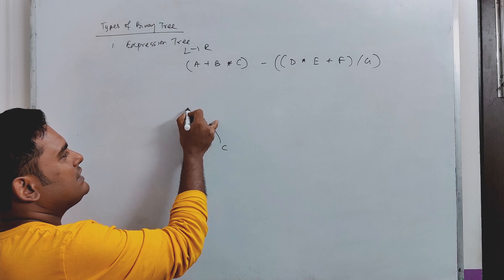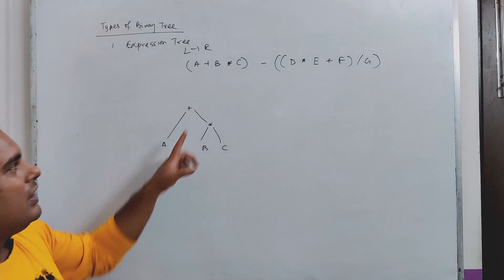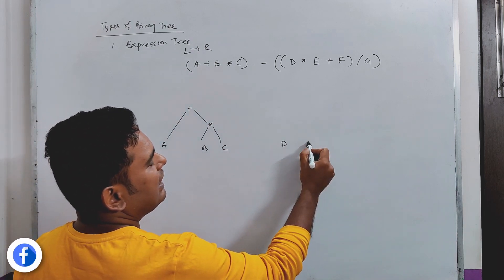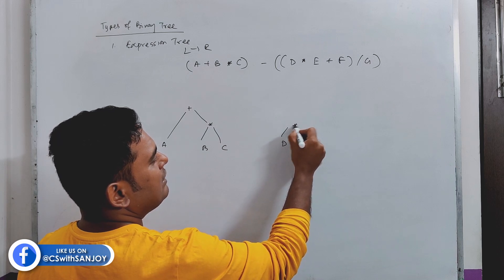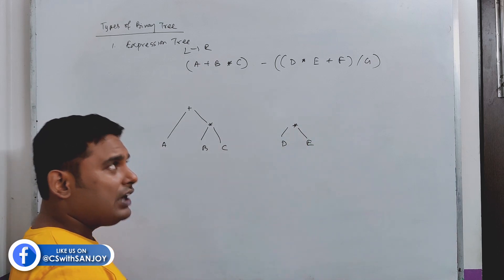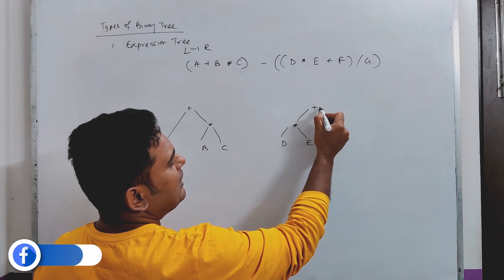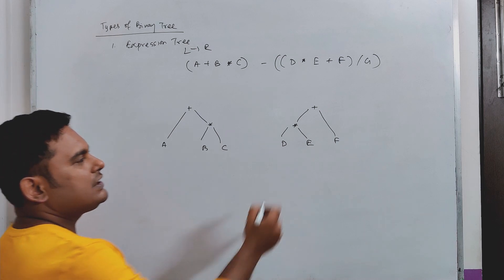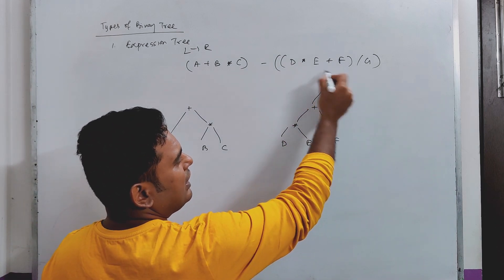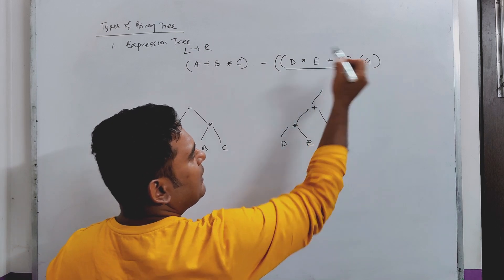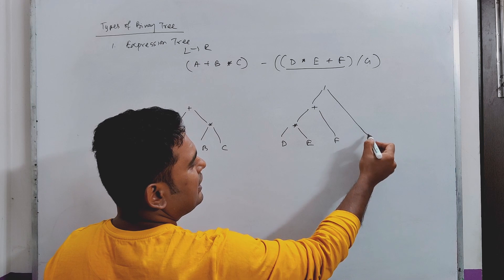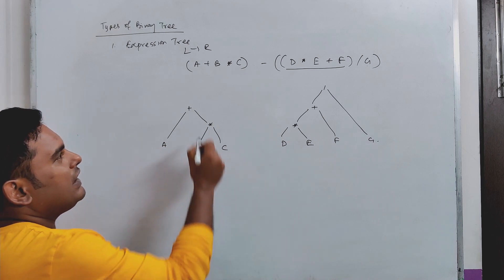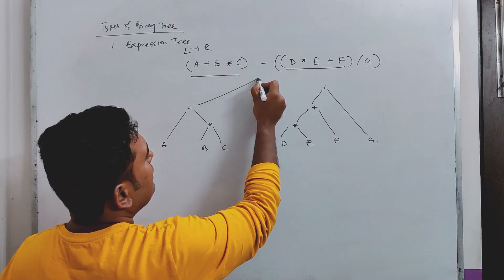Now, A is on the left. A is a binary operator node. D and E are multiplication. That is called plus with F. A is part of the expression subtree. This part has been built in the tree.